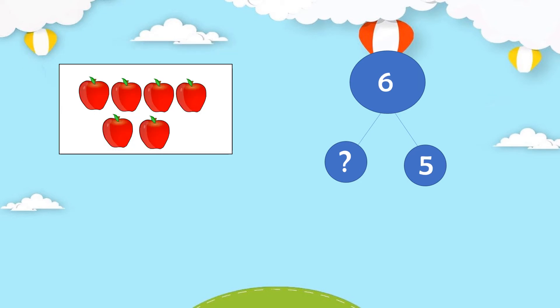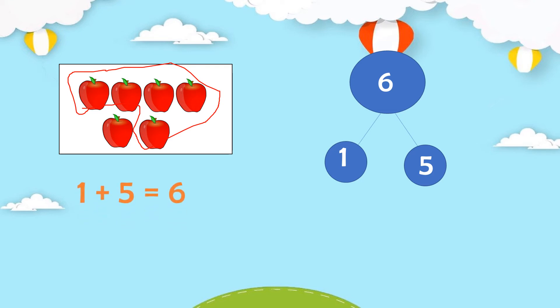Another example: we have six apples altogether and five are shown — find the missing part. Let's draw until five: one, two, three, four, five. How many are left? We have one. So one and five makes six. Using the mathematical sentence: one plus five equals six.